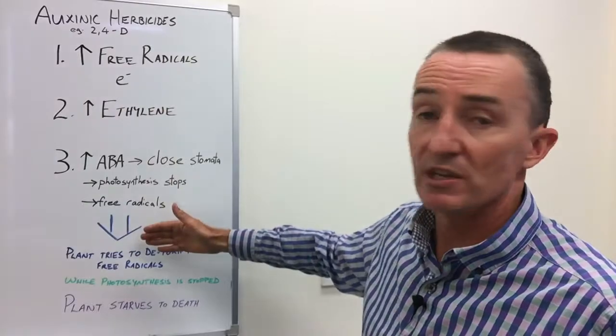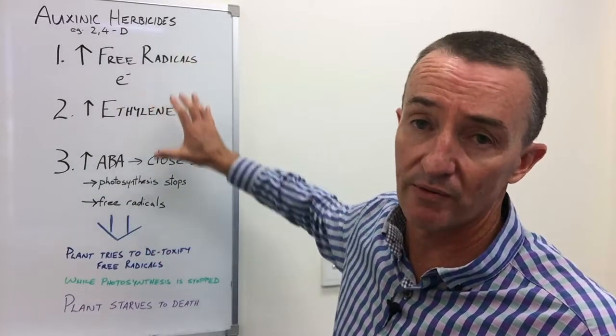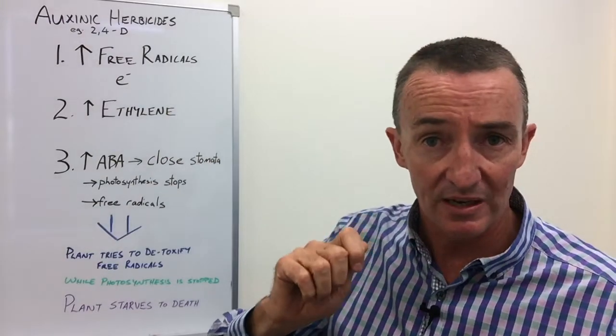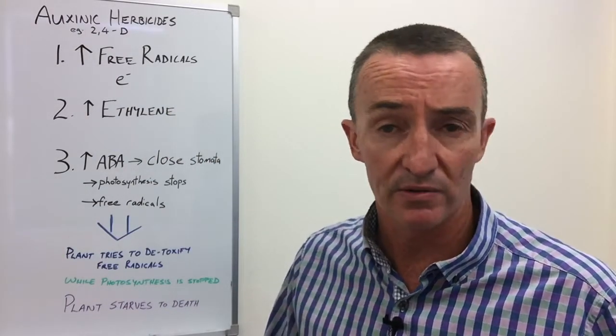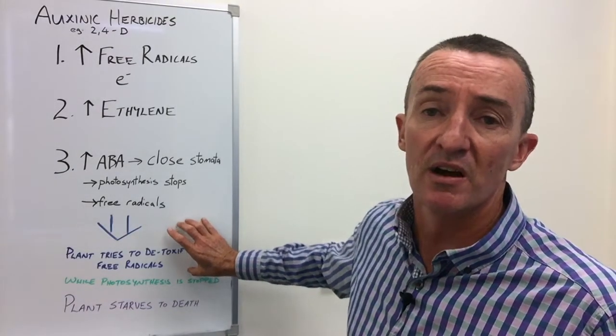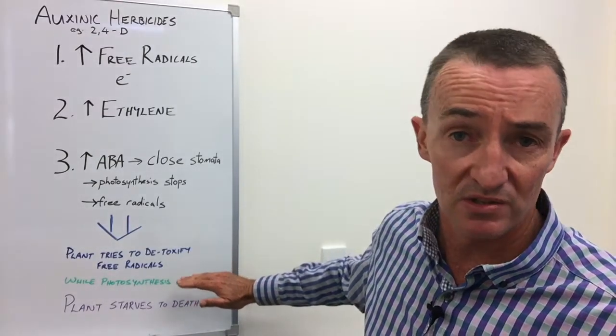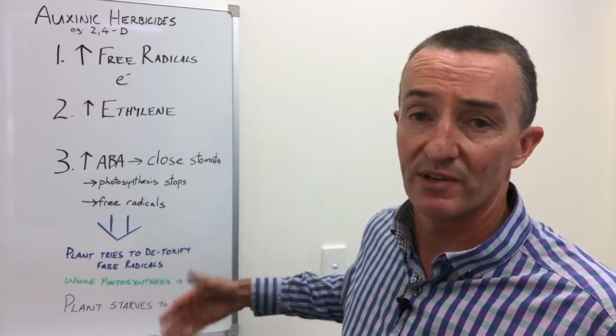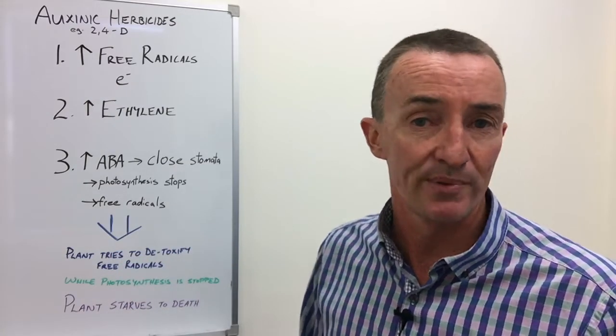What does the plant do? It tries to detoxify all of these free radicals, a little bit like us drinking green tea or our body's natural systems trying to detoxify free radicals that cause cancer. The plant is doing this costly exercise of trying to detoxify the free radicals. Meanwhile, photosynthesis is stopped and the plant eventually starves to death because it's trying to do something costly while it's not being fed.